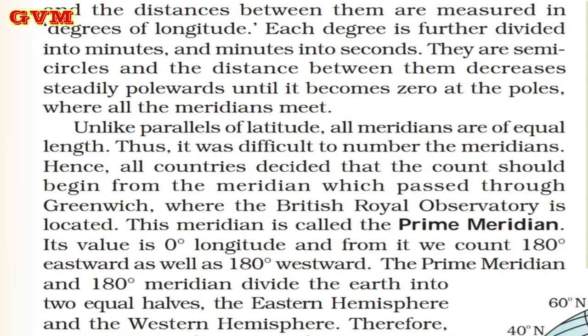Unlike parallels of latitudes, all meridians are of equal length. Since it was difficult to number the meridians, all countries decided that the count should begin from the meridian which passed through Greenwich, where the British Royal Observatory is located.